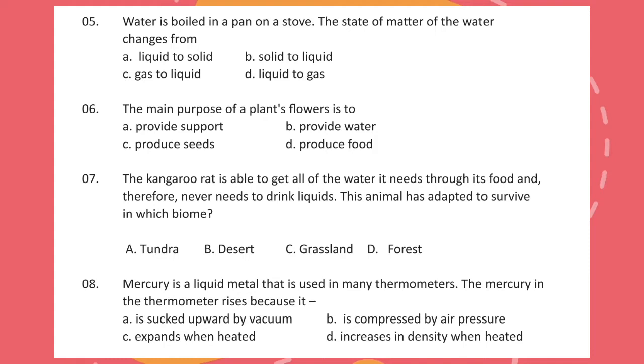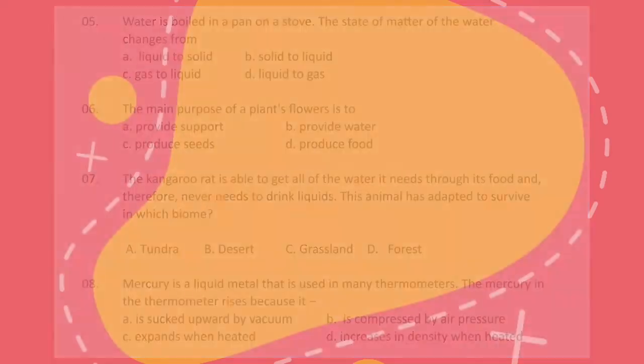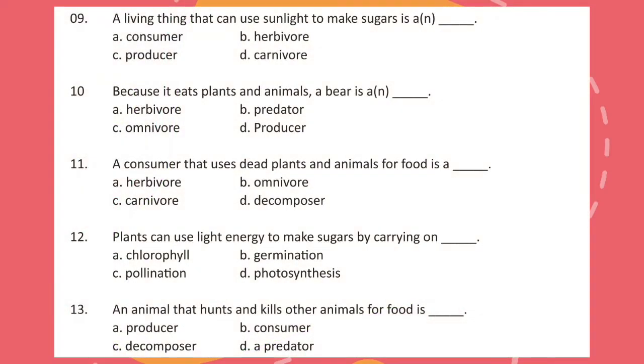Question 8: Mercury is a liquid metal that is used in many thermometers. The mercury in the thermometer rises because it? Question 9: A living thing that can use sunlight to make sugar is an? Question 10: Because it eats plants and animals, a bear is an?